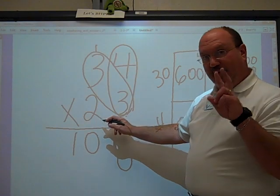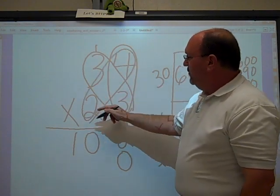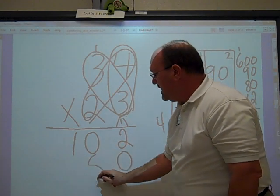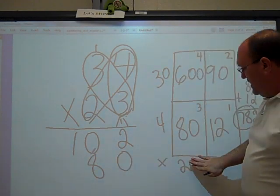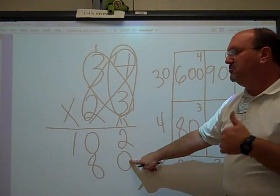So the next butterfly, the second butterfly, is 2 times 4. And 2 times 4 is 8. But remember, it's actually 20 times 4 is 80. And that's why we have the placeholder 0. Good trick to learn.